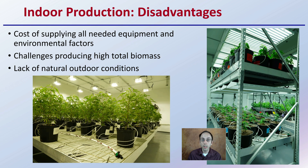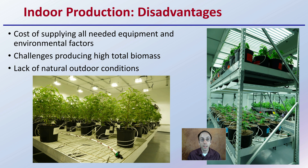The disadvantages of indoor production are simply the cost of all the equipment you need. You need to supply the lighting, the water, and the air circulation. There are also challenges in producing high total biomass because of the expense associated with the area. You also have a lack of natural outdoor conditions, so you have to make sure you're regulating and simulating outdoor conditions to maximize the growth of your plants.